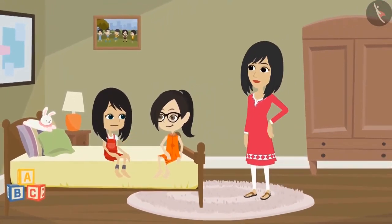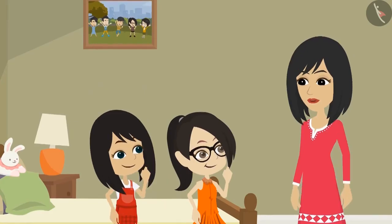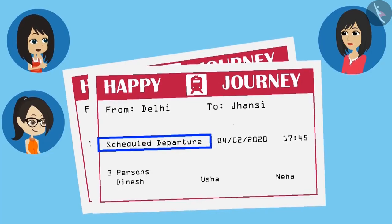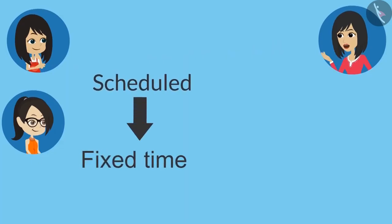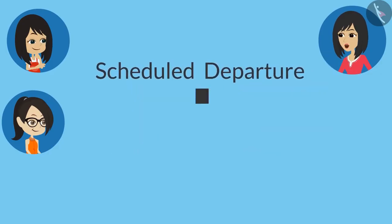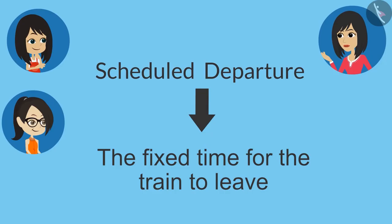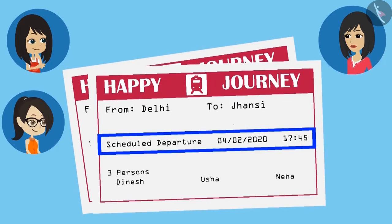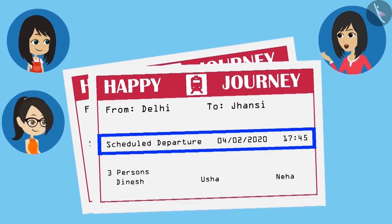Mummy, it's good you came. We want to ask you something. Mummy, this is our train ticket. It has 'scheduled departure' written on it — what does this mean? Scheduled means fixed time, and departure means to leave. So scheduled departure means the time fixed for the train to leave. That is, the train will leave from the platform at this time, so we have to board the train before this time. This information is showing both the starting date of journey and time of the train.